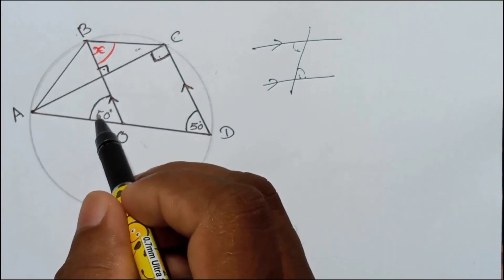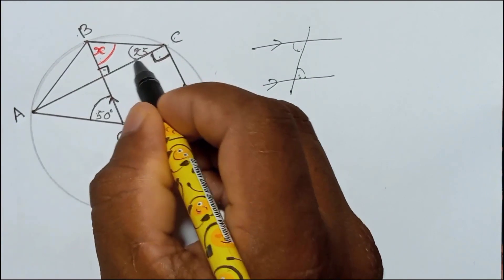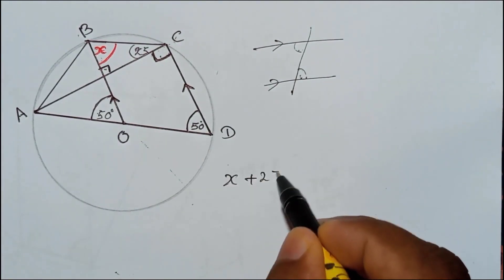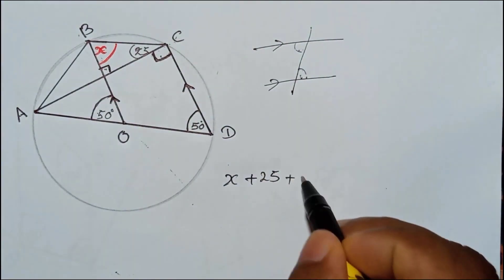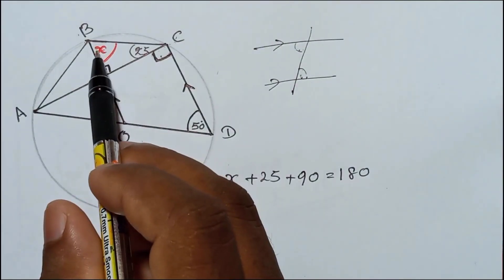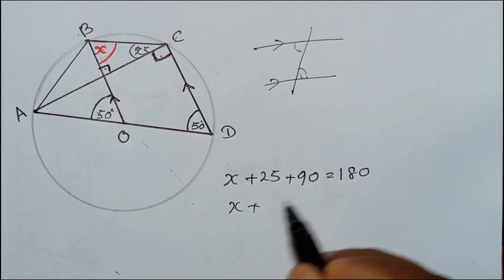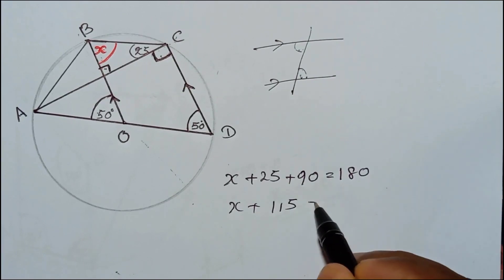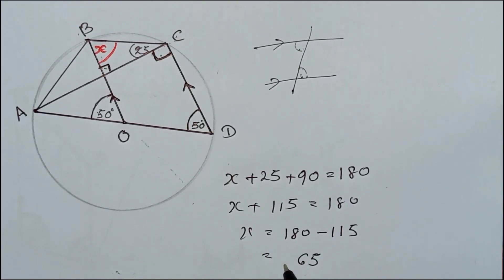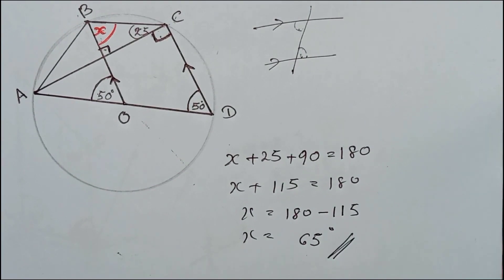Now you know how to get the value of x. So you can write: x plus 25 plus 90 should be 180, the interior angles of a triangle. So when you add it, this will be 115 and 180 here. So you can get the value of x. x plus 115 equals 180. When you subtract it will be 65 degrees. X will be 65 degrees. That's the answer. Value of x is 65 degrees.